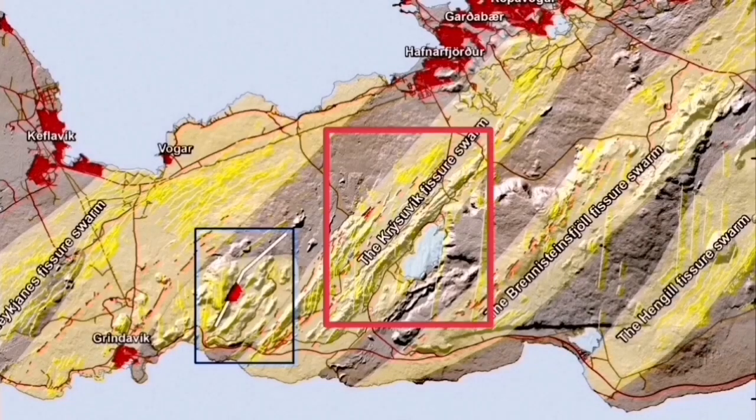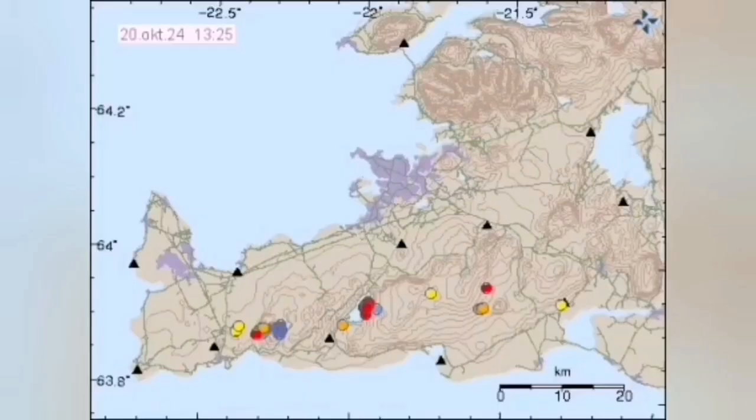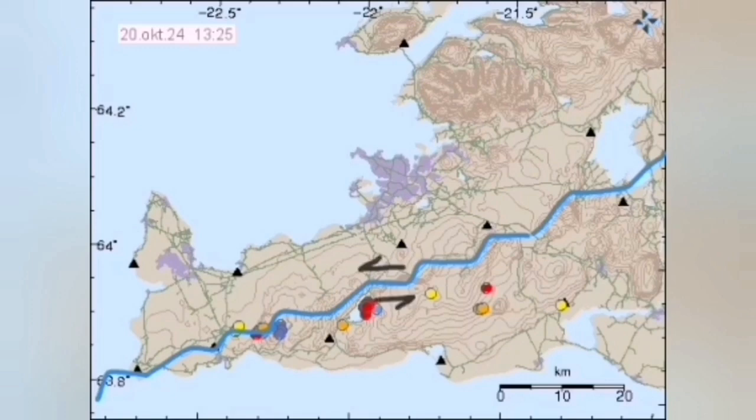When the movement in this peninsula happens, the Krýsuvík and adjacent volcanic systems—the fault lines they have—have to accommodate this through the transform faults, as you see here. This is a jagged line of the transform fault and the normal faults. Transform faults are those ones in the black I've marked.